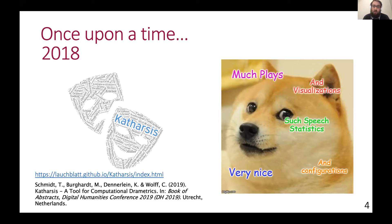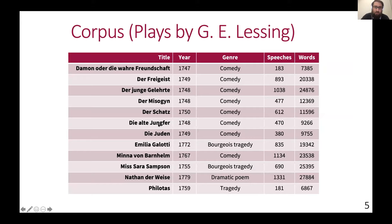We decided to focus our pilot study in the realm of sentiment analysis on the plays of Lessing, just because we felt most comfortable with the author itself. The corpus we explored sentiment analysis on consists of all the plays of Gotthold Ephraim Lessing, a famous German playwright. As you can see, there are a lot of comedies in this corpus, a couple of tragedies — everything around 1750. Of course, there is a lot of historical language and the upcoming problems are pretty apparent.